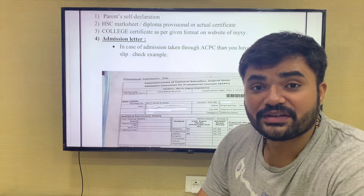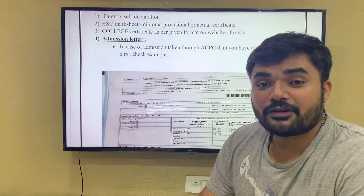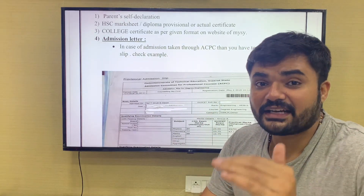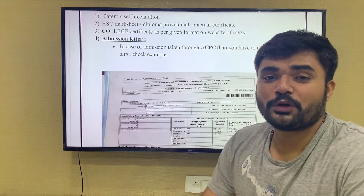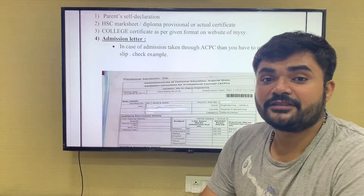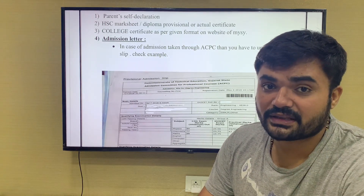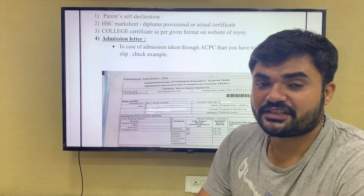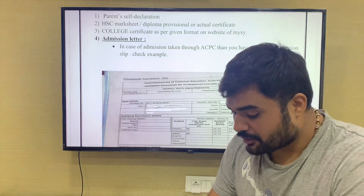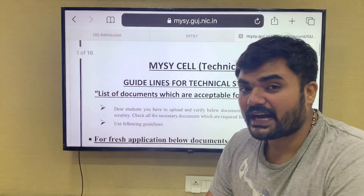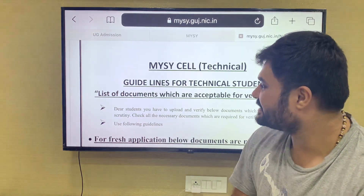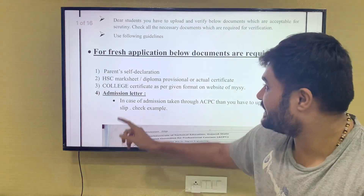If the required documents are asked, we have to discuss exactly what the documents are. We will discuss this because you will upload and apply, so you will not reject the application. You will have an enrollment number from your college and a registration. If you don't have a 10th seat number or 12th seat number, you will not be able to proceed. This document is called MySY Technical. The first document is Parent Self-Declaration.